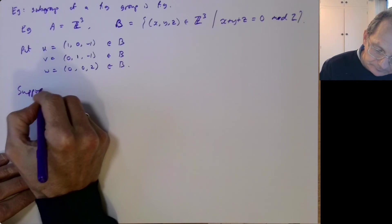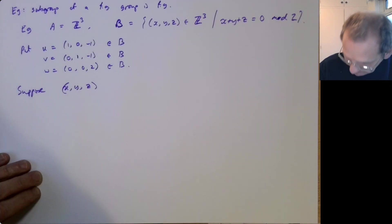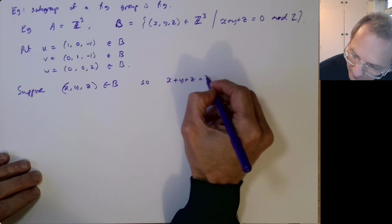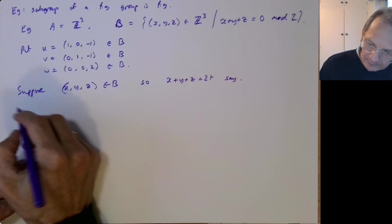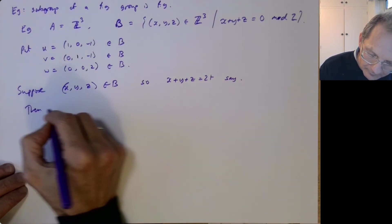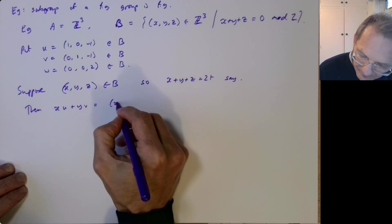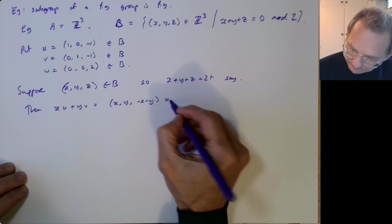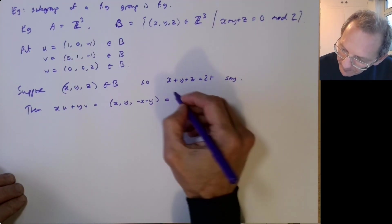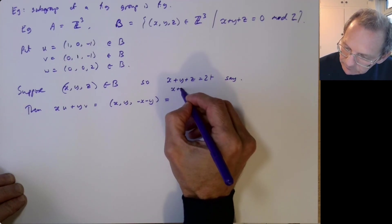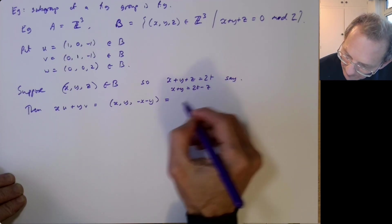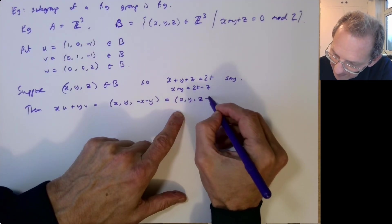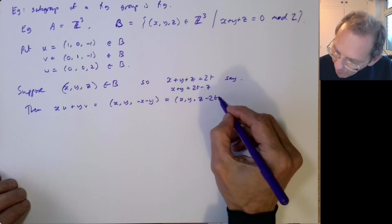So let's suppose X, Y, Z is in B. So X plus Y plus Z is 2T, say. So then if we look at XU plus YV, so that's X, Y, minus X, minus Y. So here you've got X plus Y is going to be 2T minus Z. So that's X, Y, and then we've got Z minus 2T here, if you like.